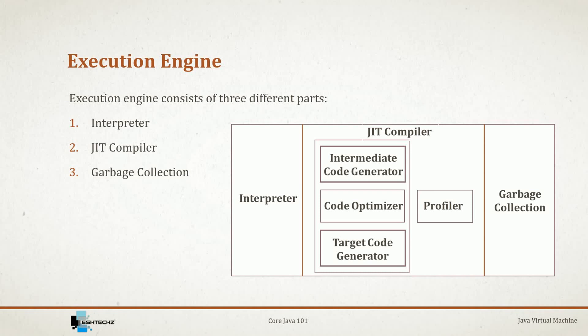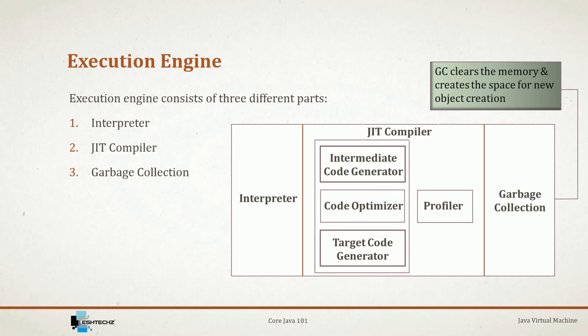The last part of the execution engine is garbage collection. Garbage collection is the process of cleaning up memory by removing objects that are not in use or whose references have been removed. This is performed by the garbage collector, which is a daemon thread that runs in the background. Garbage collection is a big topic which will be covered in unit 2 of this course.